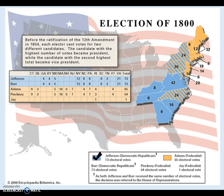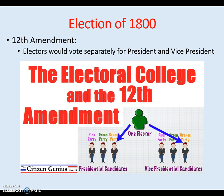The election of 1800 pitted Jefferson, Burr, Adams, Pickney, and Jay against each other. Back then, the Electoral College voted in one election — everyone against everyone else. Whoever came in first became president; whoever came in second became vice president. This created interesting dynamics because you could have a president and vice president from different political parties. The downfall of this system was the possibility of a tie, and that's exactly what happened — Thomas Jefferson and Aaron Burr each got 73 votes. Congress had to decide who became president, and they picked Jefferson.